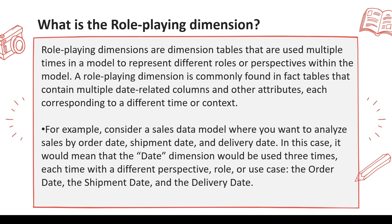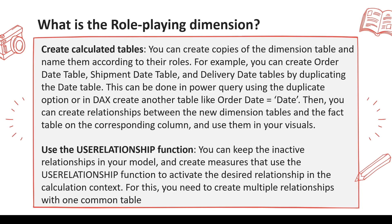One way to handle this is by creating calculated tables — copies of the dimension table named according to their role. You can create an order date table, a shipment date table, and a delivery date table by duplicating the date table. This can be done in Power Query using the duplicate option, or you can write DAX like: order_date = date. Then create the relationship between the new dimension table and the fact table on the corresponding column.